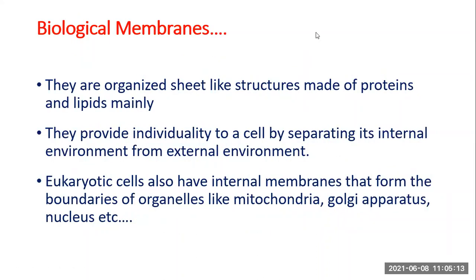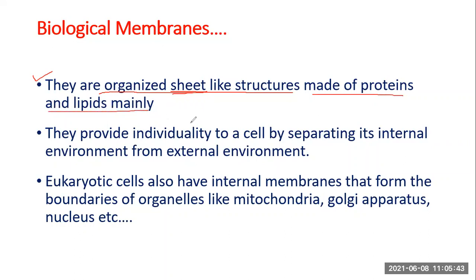What are Biological Membranes? Our primary aim is to make our concepts clear. The bookish definition is that they are organized sheet-like structures — the way you have a paper sheet, something like that. They are made up of two primary components: proteins and lipids.